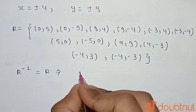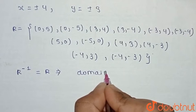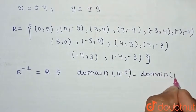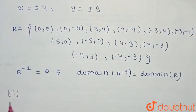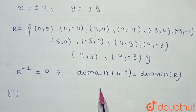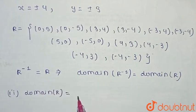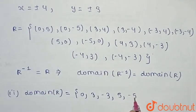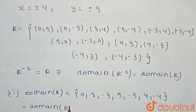Since R⁻¹ = R, the domain of R⁻¹ equals the domain of R. The domain of R is the set of all x-values: {0, 3, −3, 5, −5, 4, −4}. This is the domain of both R and R⁻¹.